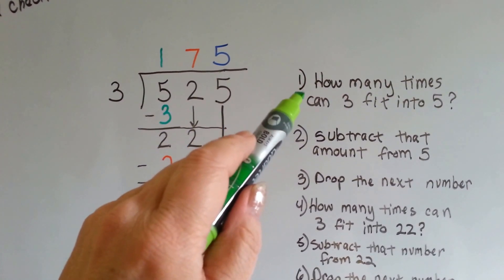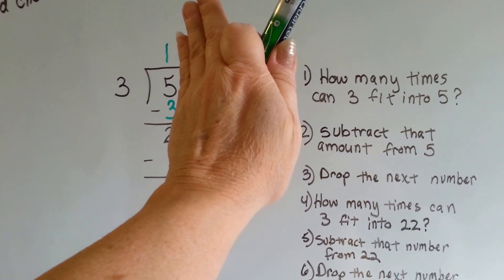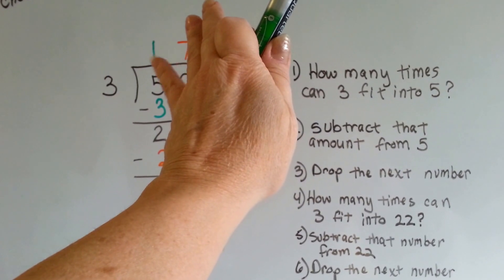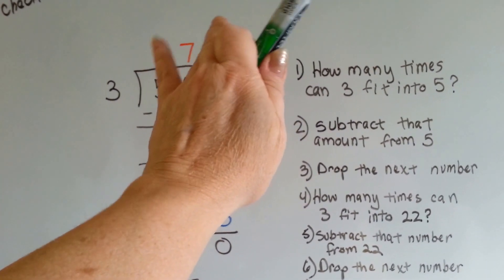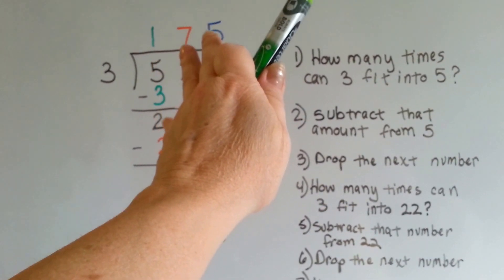The first thing we do is ask how many times a 3 can fit into a 5. How many times can that 3 fit into that 5? Just one time. So we put the 1 above the 5, because that's what we put it into. We multiply the 3 times the 1, and we put the 3 down here, and we subtract.